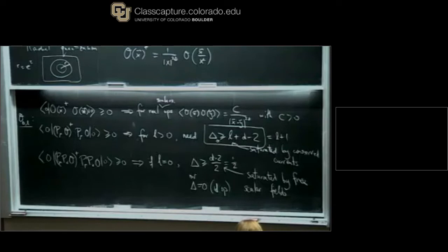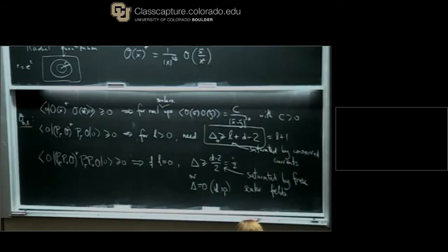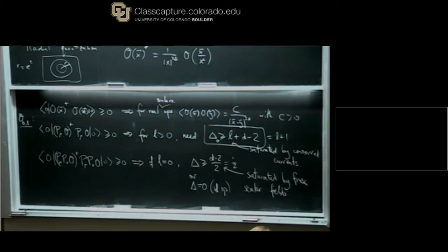Assume people have seen unitarity bounds before? Does the second condition give another constraint if L is greater than zero? No, it doesn't — just this constraint. And do more P's acting give anything else? They don't do anything else. So these are the ones that give you non-trivial constraints. You can ask what happens if O was a spinor, but that's a different story. In that case, L equals one half is different from larger L.